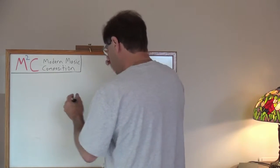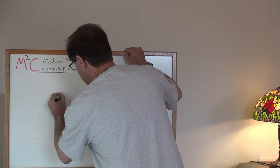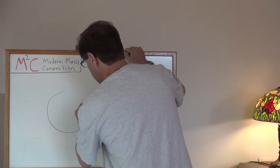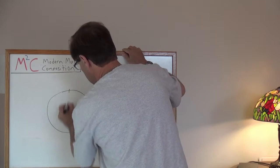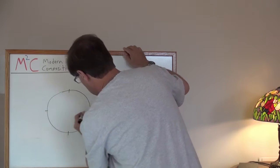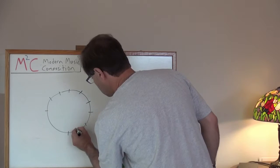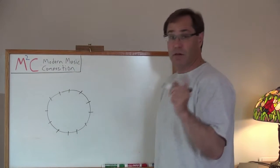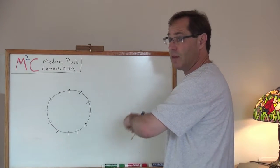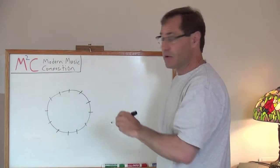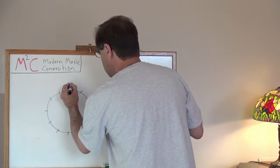So let me draw another clock diagram. Rather than write out the circle of fifths, we're just going to write out the chromatic scale in circular form. We'll start with C at the top.